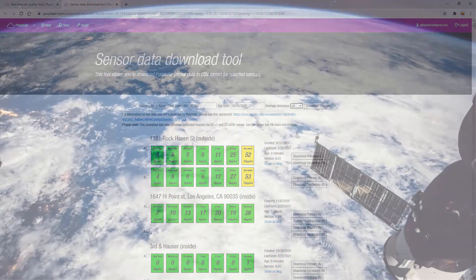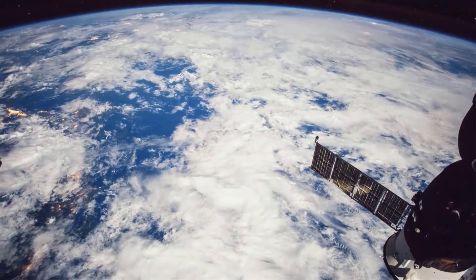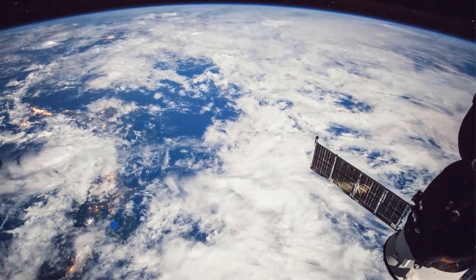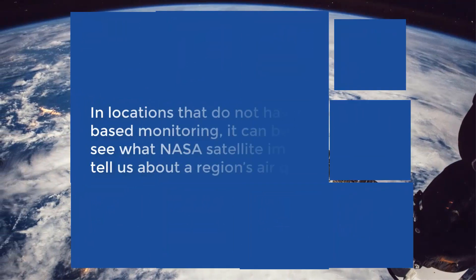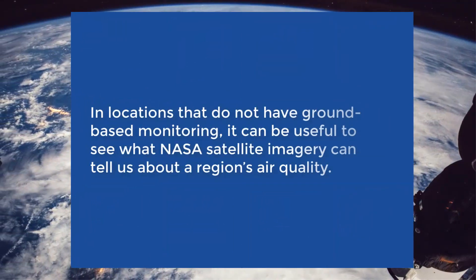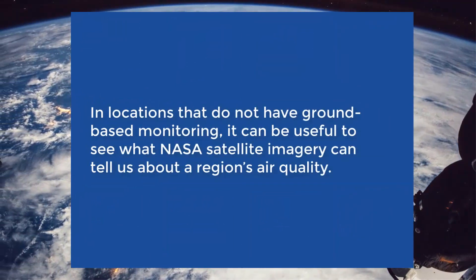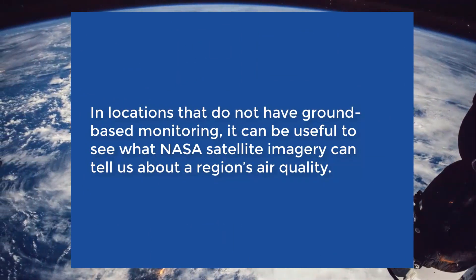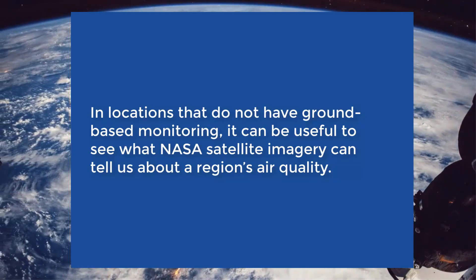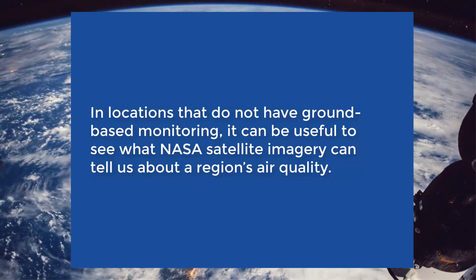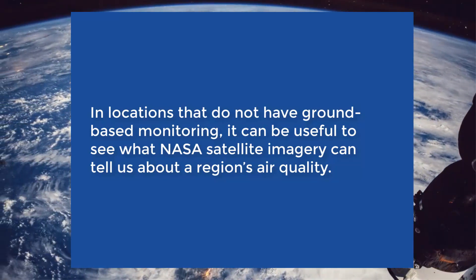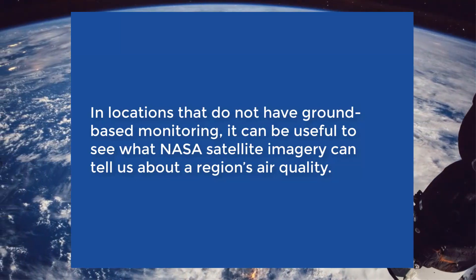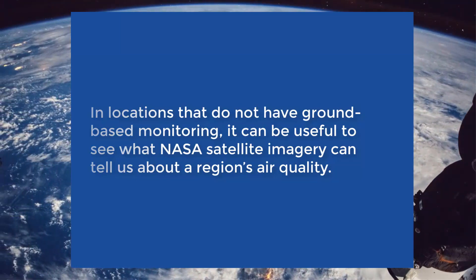You can use satellite imaging to confirm observations you're seeing in your on-ground sensor data. Also, there are many locations on our planet that do not have ground-based monitoring. In these and other cases, it can be useful to see what NASA satellite imagery can tell us about a region's air quality.